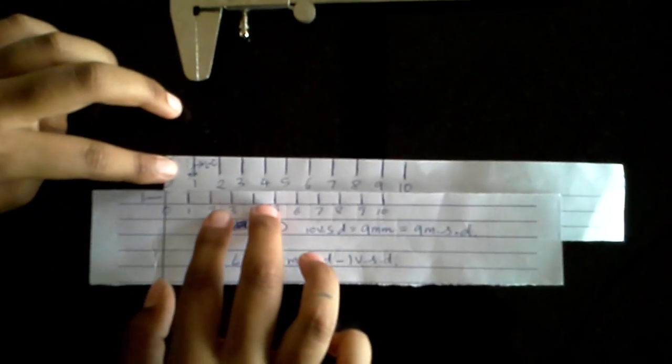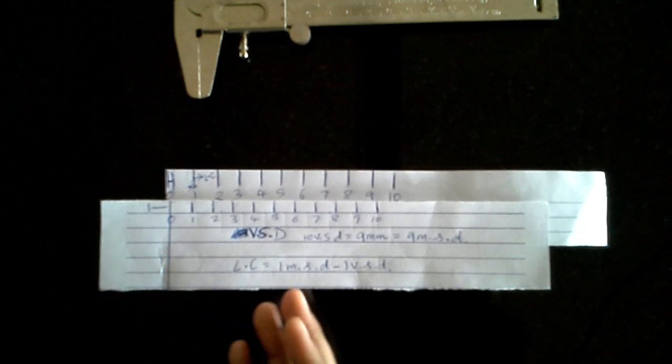The one from the VSD—I'm going to refer to VSD and MSD now—the vernier scale divisions and the main scale divisions. So the VSD one and the MSD one are coinciding. So when it coincides, this creates a small gap over here.